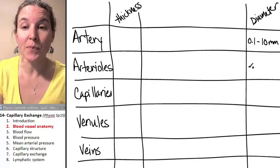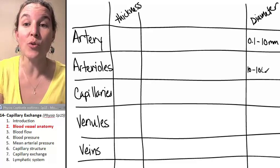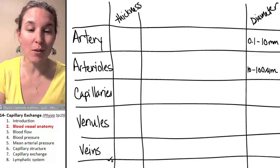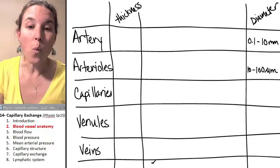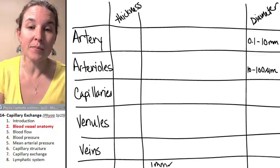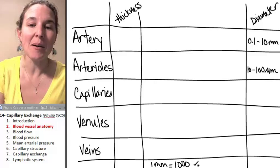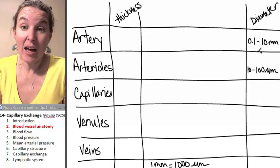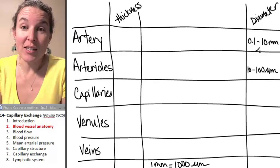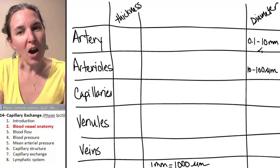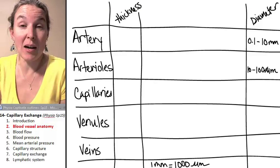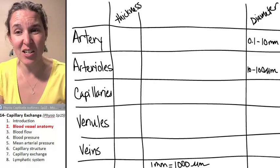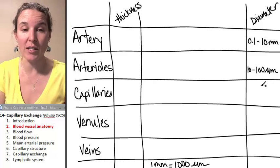Arterioles, on the other hand, are 10 to 100 micrometers. And I'm just going to throw down here because I had to look it up: one millimeter equals 1,000 micrometers. And so you can see that 100 micrometers is 0.1 millimeter. So it makes sense that our arteries are going to become the biggest arterioles, and then arterioles are going to get smaller as we go.